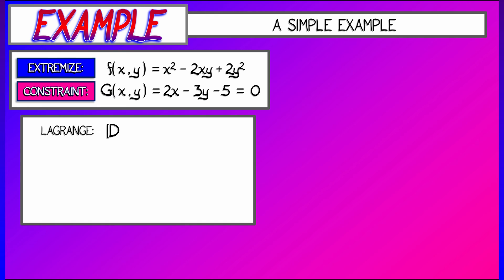The Lagrange method says take the derivative of f and the derivative of g and multiply the derivative of g by lambda, set them equal to one another. That's the same thing as getting those gradients parallel.